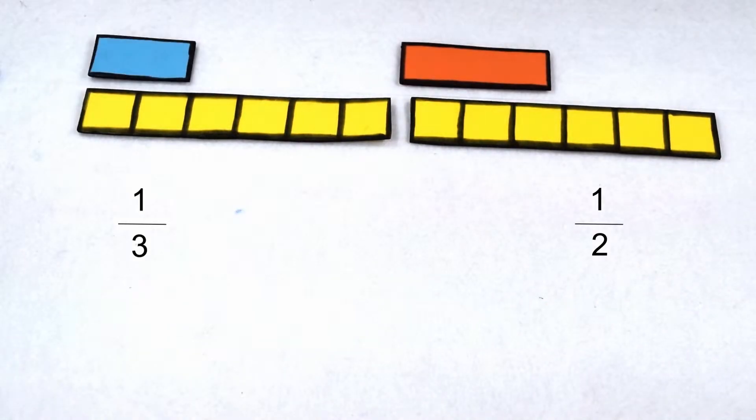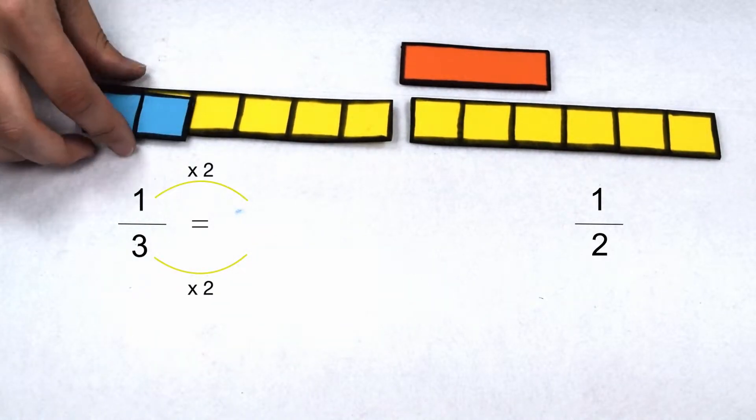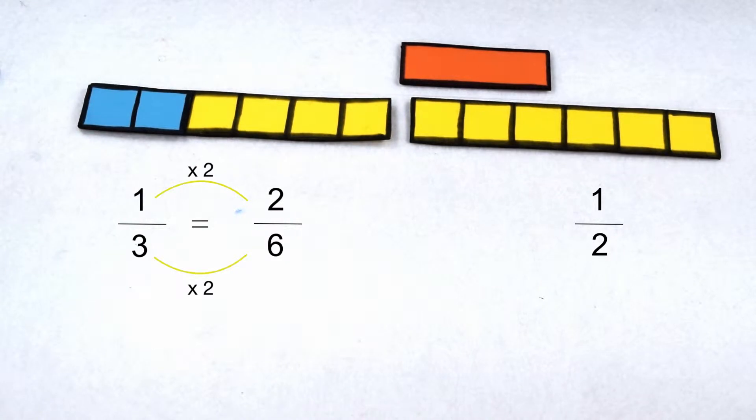To change one-third to a fraction out of 6, I need to multiply 3 times 2. That means I also need to multiply my numerator times 2. 1 times 2 gives me 2, so one-third is going to be equivalent to 2/6.